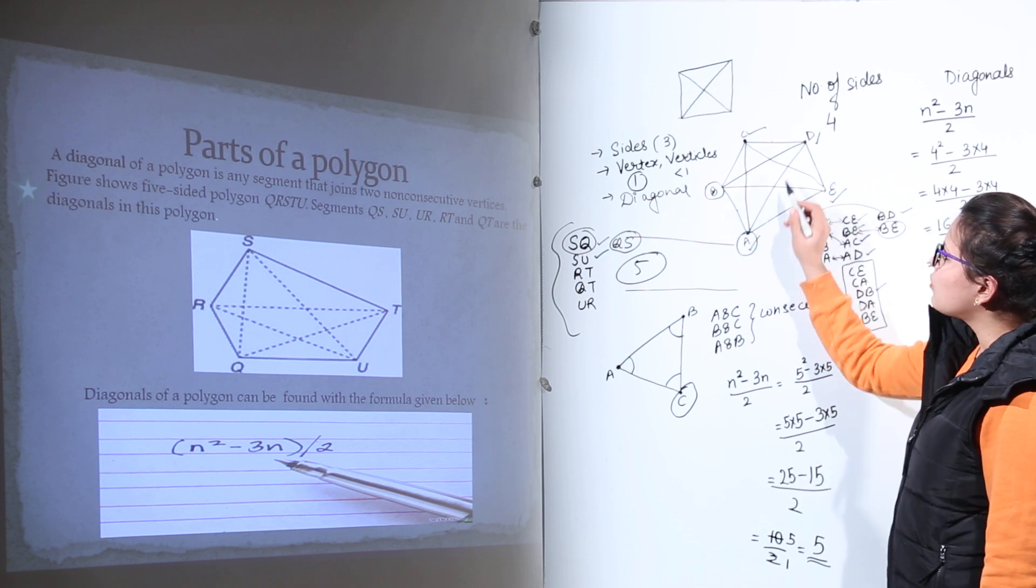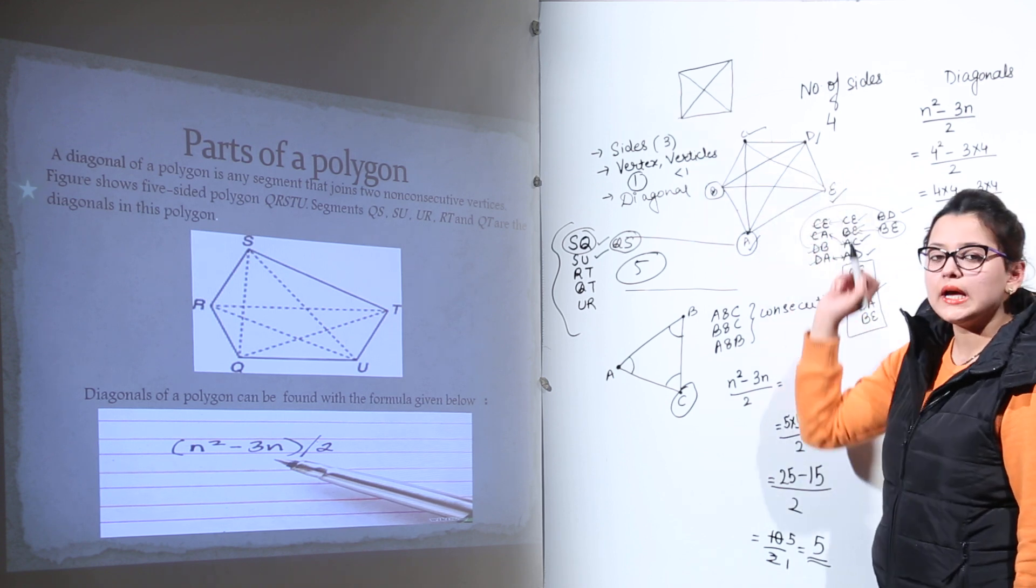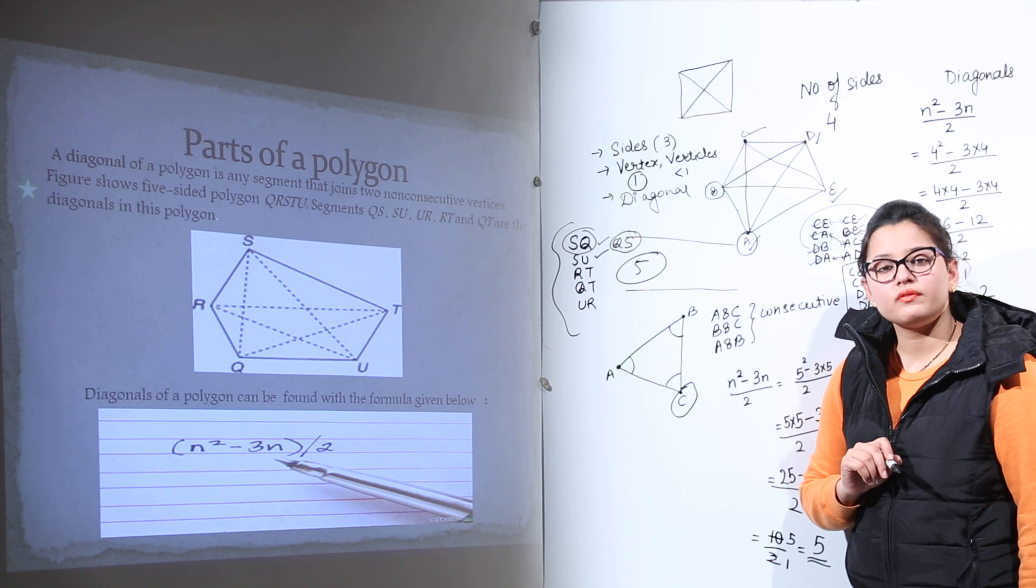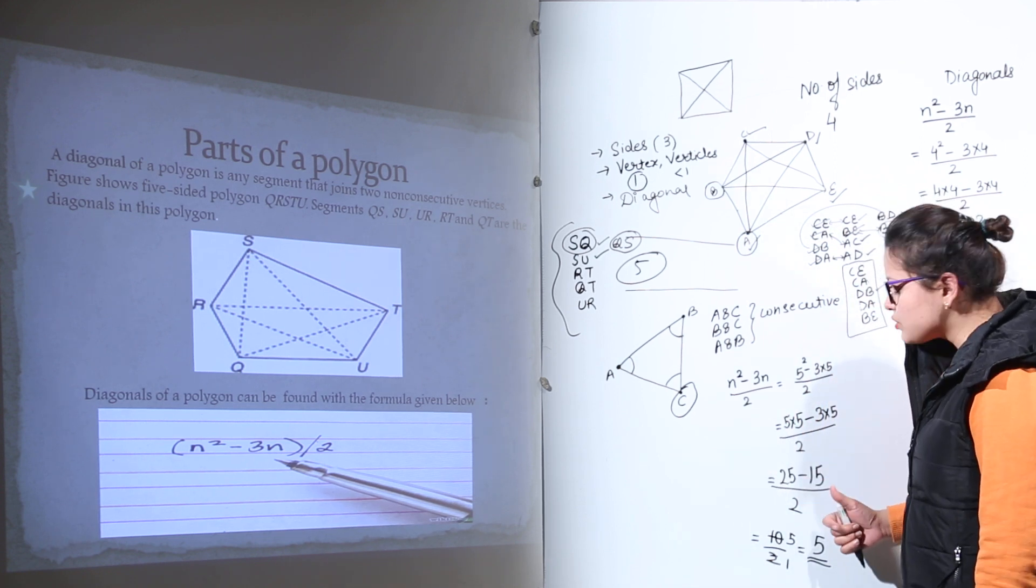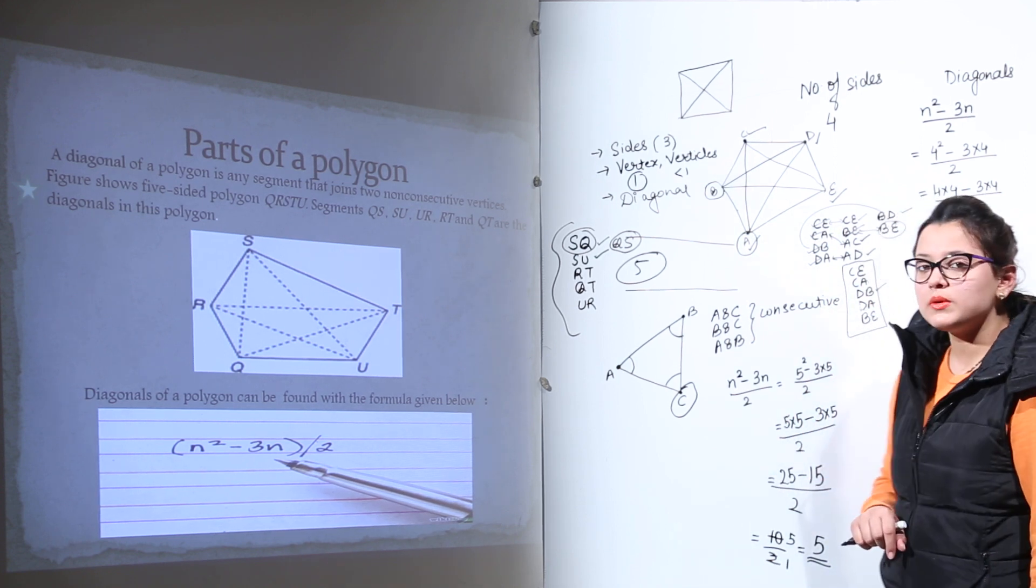That means the way we have drawn the shapes, the diagonals for the shape we have drawn were perfectly correct because based on the calculation we also get the number of diagonals to be 5.